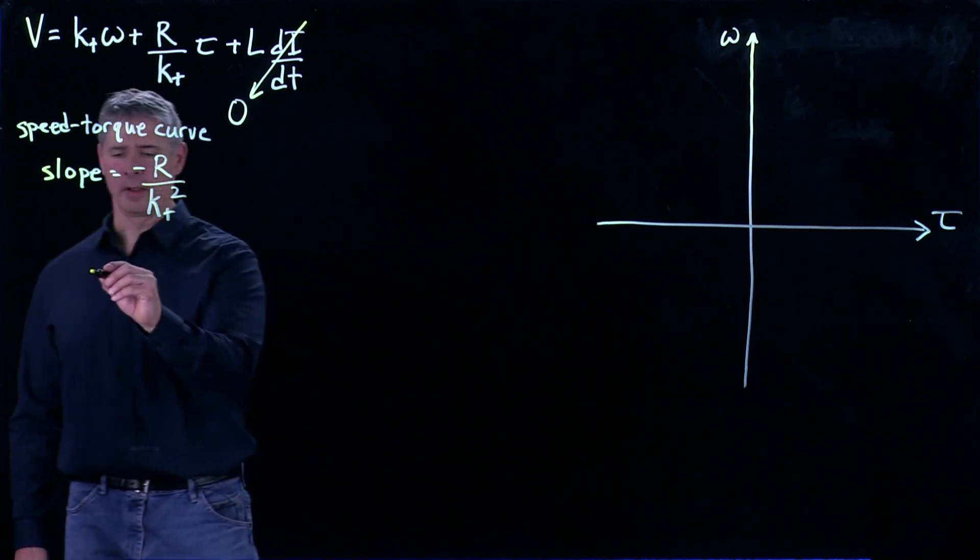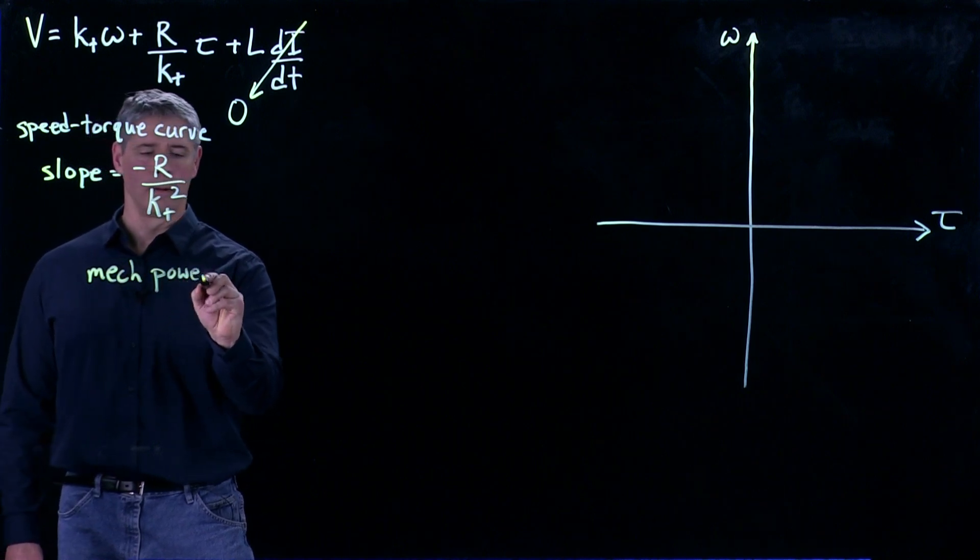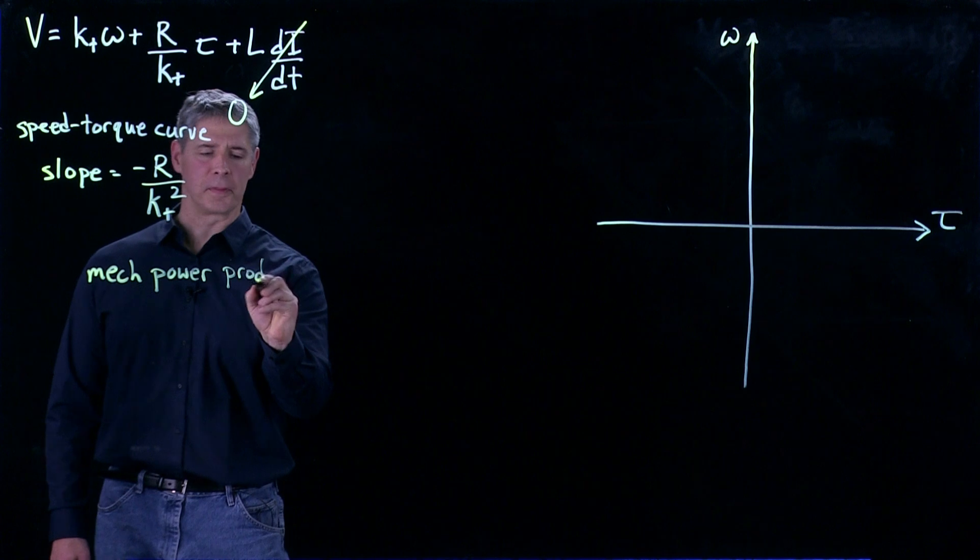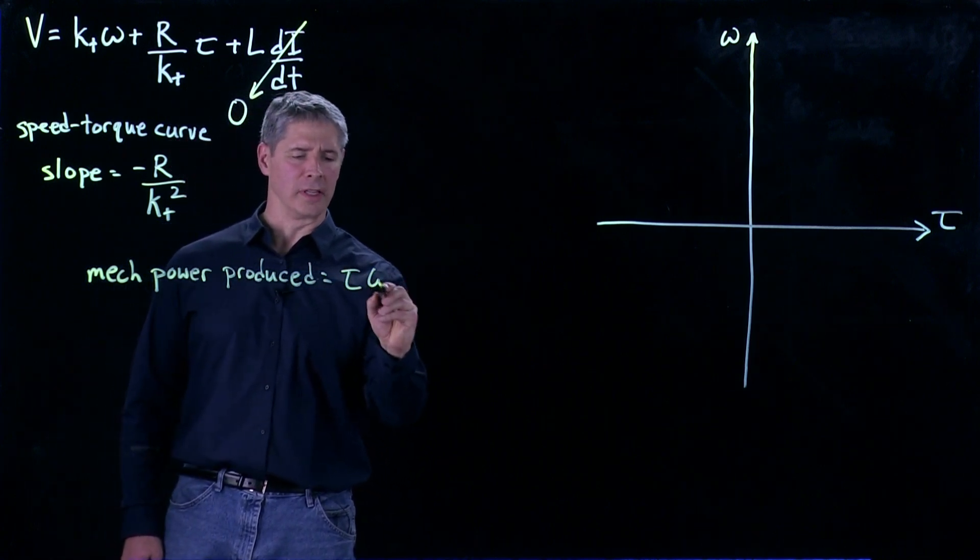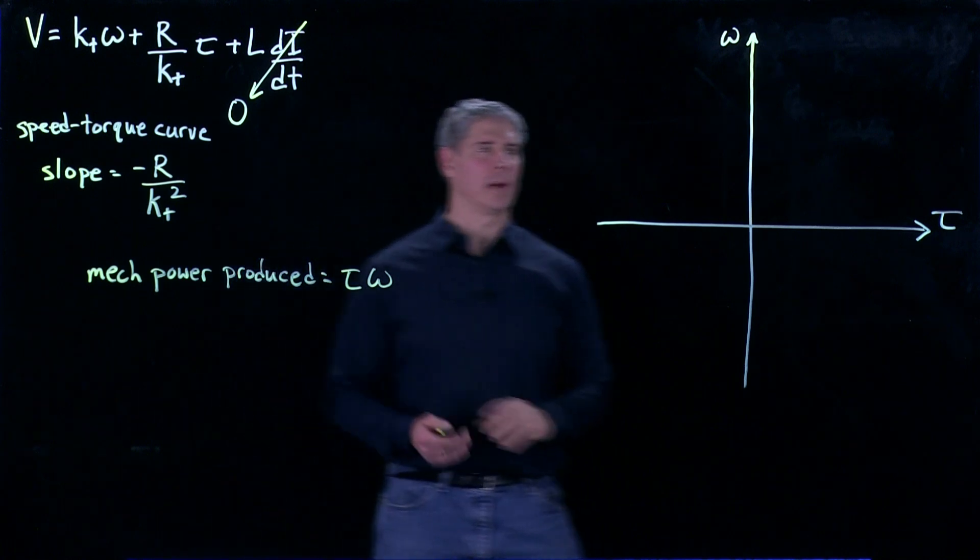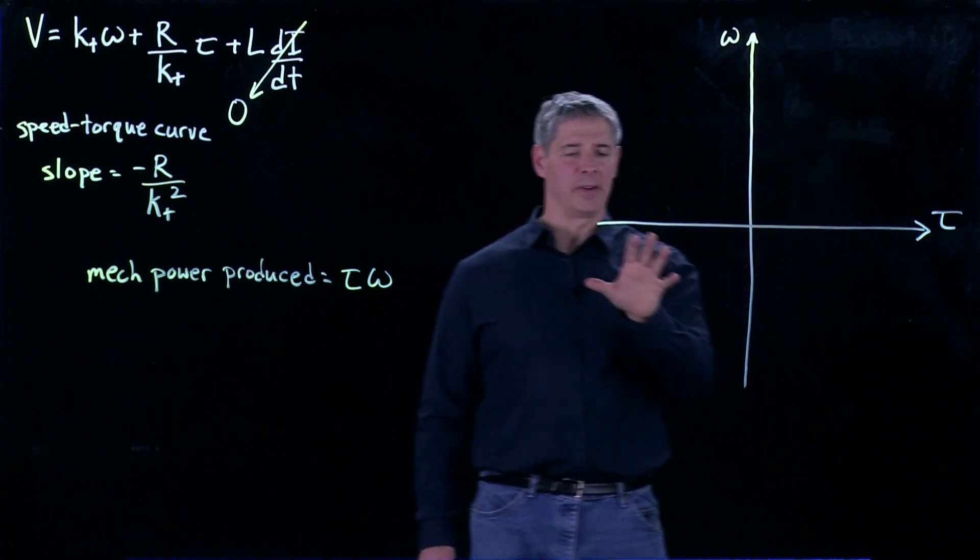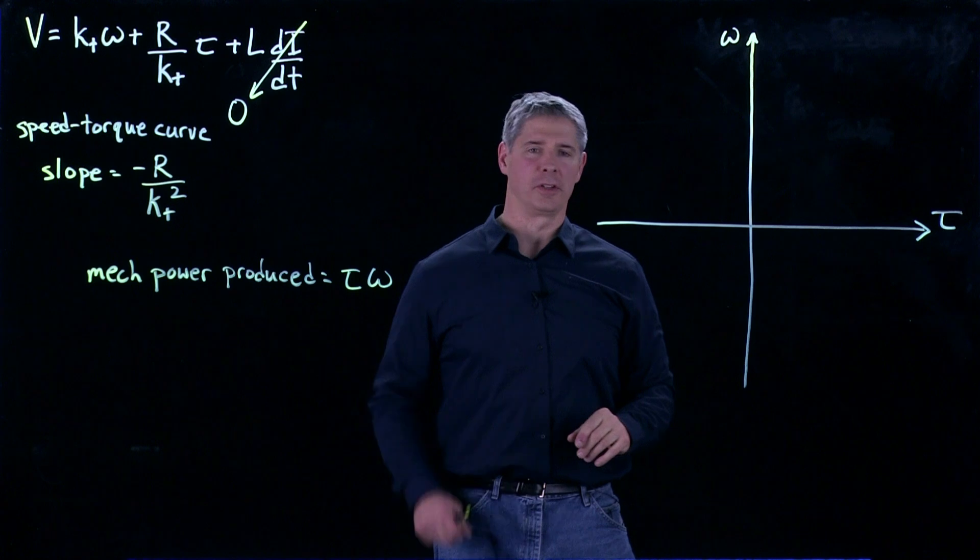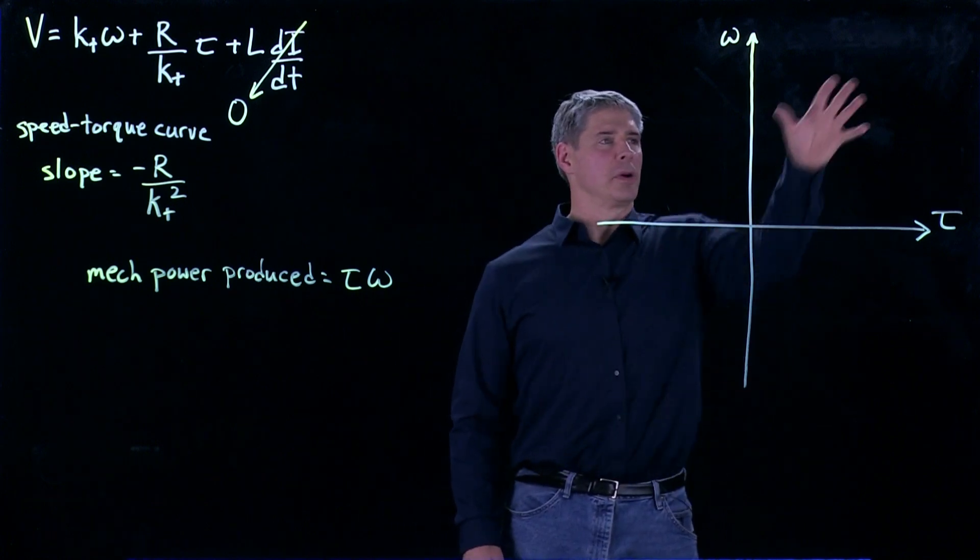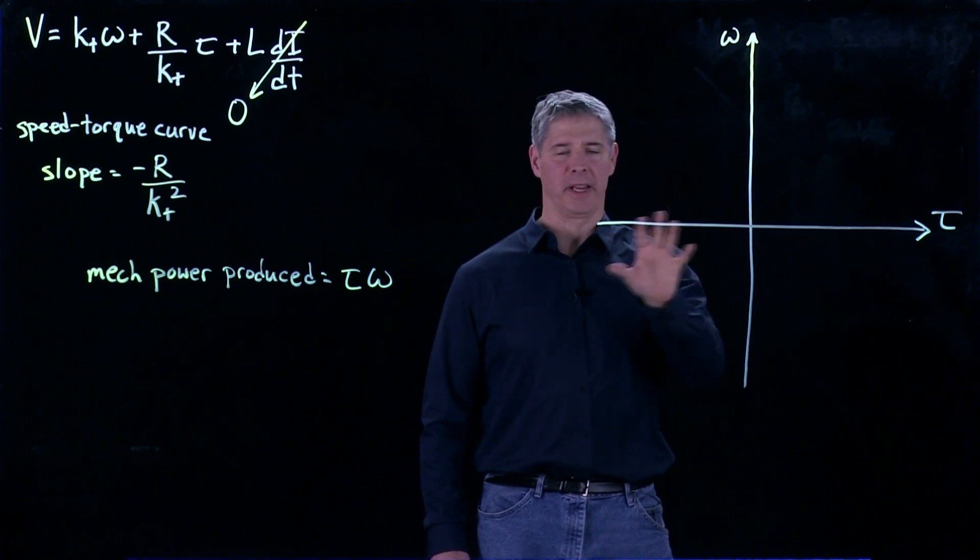Now the mechanical power that's produced by a motor is just the product of the torque and the angular velocity. So up here in the top right quadrant where both the torque and angular velocity are positive, and down here in the third quadrant where they're both negative, the product of the two is going to be positive. So here the motor is producing mechanical power, here it's producing mechanical power.